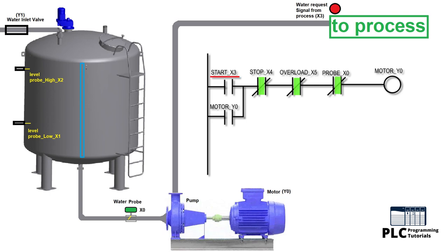As you can see, we have a start push button x3 and stop push button x4. Stop push button is used as normal close contact. Motor overload signal x5 and water probe signal x0 both are used as normal close contacts to stop the pump in case the motor is overloaded or there's no water in the pump suction line.